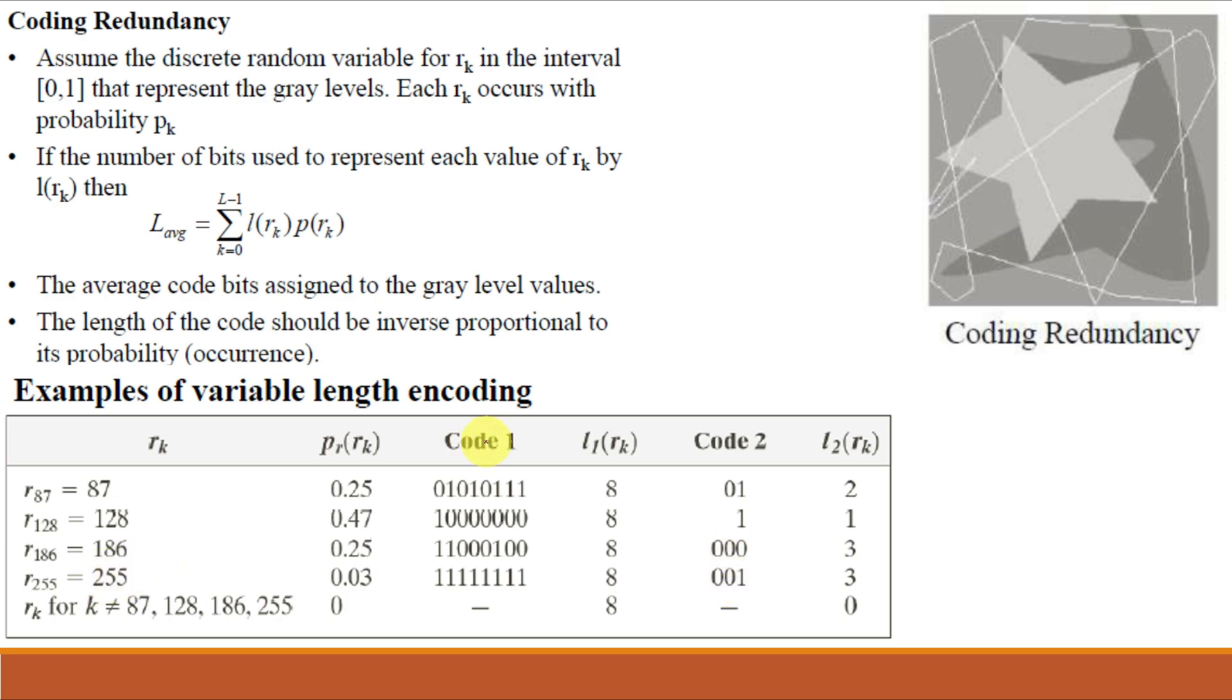Hence coding redundancy says that the 8-bit codes used to represent intensities in most 2D intensity arrays contain more bits than are actually needed. You can see that code 2 requires fewer bits than code 1. We know from our topic on histograms that r_k is the input intensity value between 0 to 255, p(r_k) is the probability of occurrence of r_k, and l(r_k) is the number of bits used to represent r_k. Then the average number of bits required to represent each pixel is L_avg = Σ(k=0 to 255) l(r_k) × p(r_k).